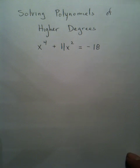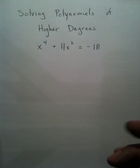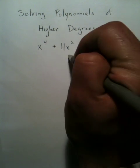When solving polynomials of higher degree, you've got to make sure the equation equals zero. Your first step will be to add 18 to both sides of the equation.